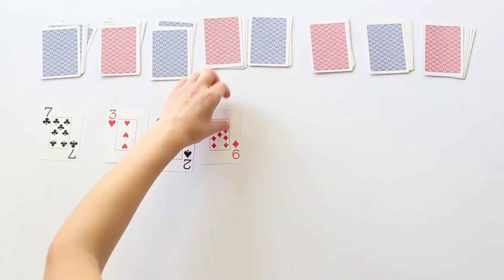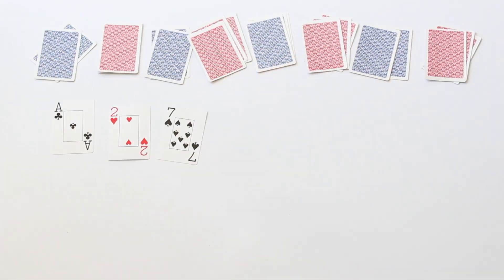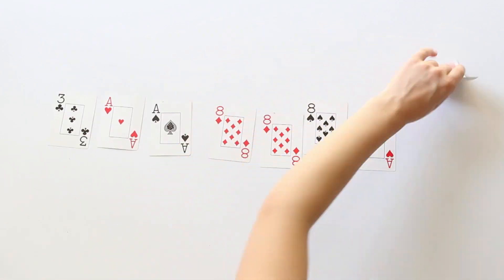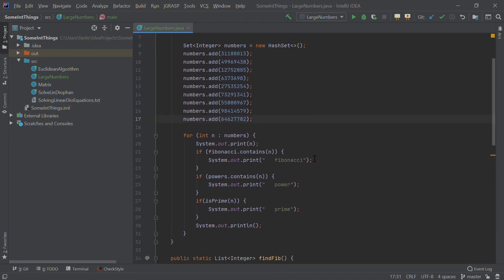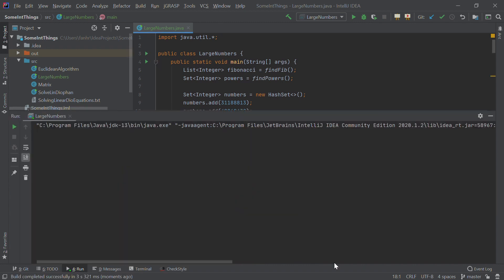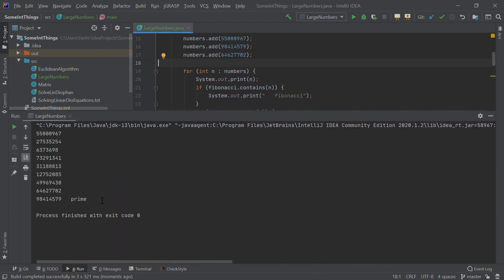I was curious about the other numbers in the piles, so I turned over the rest of the cards. I put them all into the set called Numbers, and checked if any were Fibonacci, Powers of Two, or Prime. Turns out one was Prime, and that was it. Kind of disappointing.